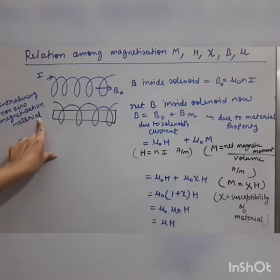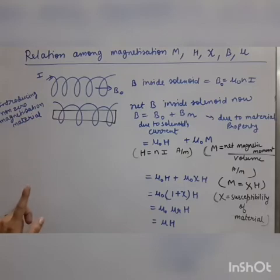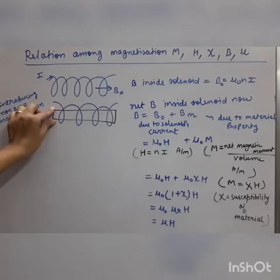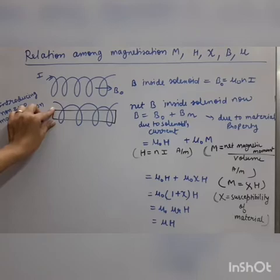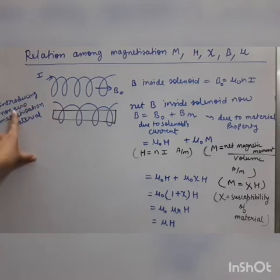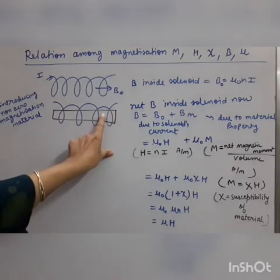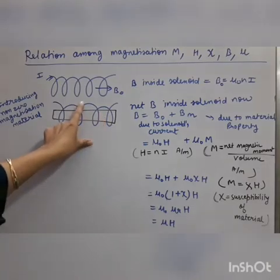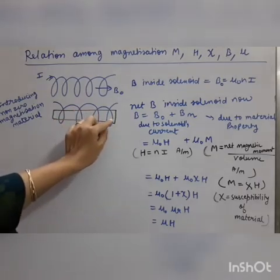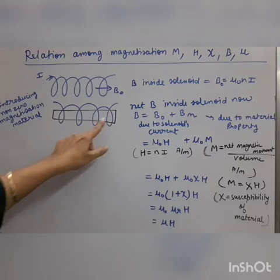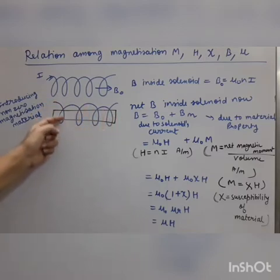Now suppose we introduce a material inside the solenoid. This material has non-zero magnetization. We have already studied that inside materials, due to circulating electrons, magnetic dipoles are developed, or magnetic moment is developed. Some materials carry zero net magnetization, but some materials have non-zero magnetization. So we take a material which has non-zero magnetization — you can say it is also a magnet. This core possesses magnetization and is kept inside the solenoid, so the total magnetic field inside is now due to two factors: one due to the material, and one due to the current-carrying solenoid.